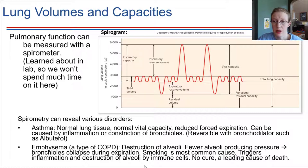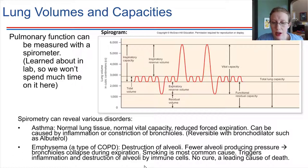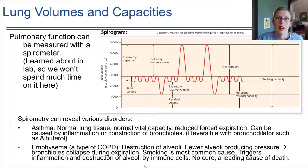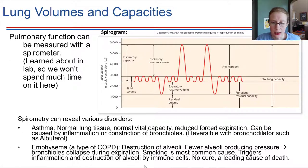Emphysema can lead to inflammation and also destruction of the alveoli by our own immune cells. This is a disease that progresses — it's hard to get the immune cells to stop once it's initiated. We don't have a cure at this point, and it can lead to death. Chronic obstructive pulmonary diseases are right up there on the list of leading causes of death.